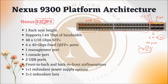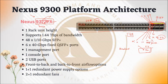In the 9300 series naming, the first two digits represent the series (93), and the last two digits represent the number of 10 Gig ports. So 9372 has 72 total 10 Gig ports. P stands for SFP modules. There are certain commands required to split a 40 Gig port into four 10 Gig connections using a breakout cable — it won't automatically break out.